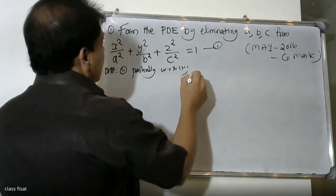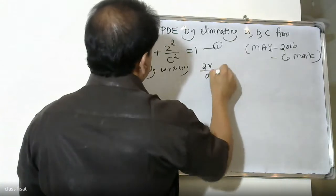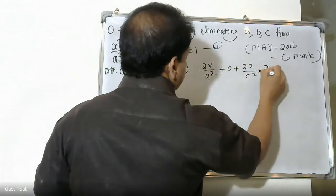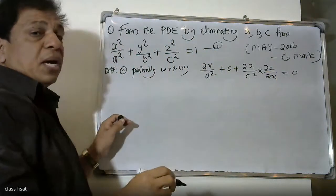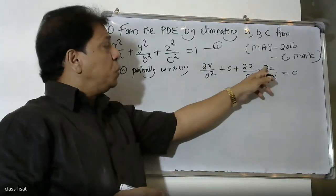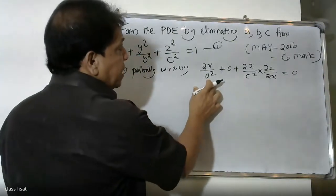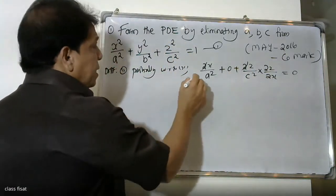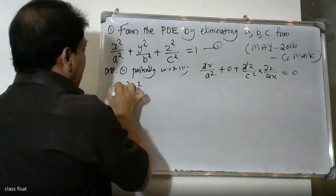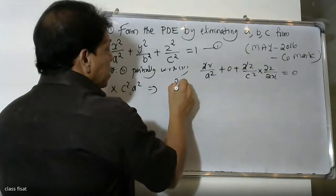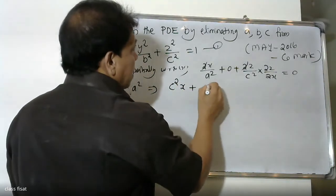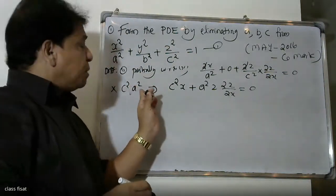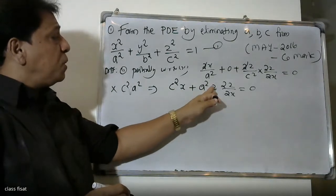Differentiating partially with respect to x: 2x by a squared plus 0 plus 2z times dou z by dou x times 1 over c squared equals 0. So z by c squared times dou z by dou x equals 0. This gives us 2x by a squared plus z by c squared times dou z by dou x equals 0. Observing that c squared times x plus z times dou z by dou x equals 0.